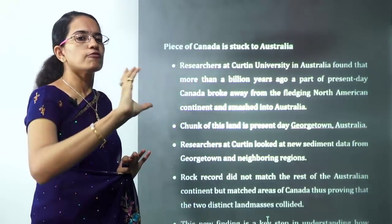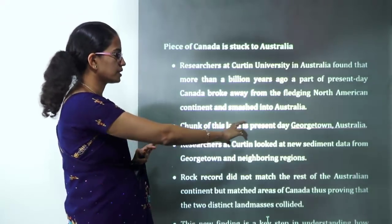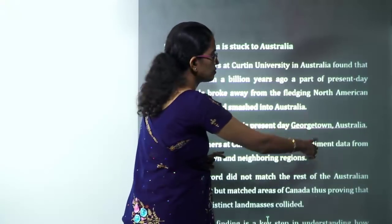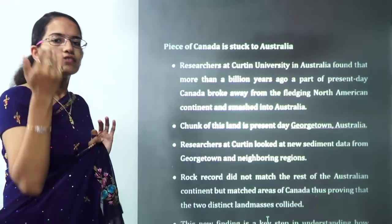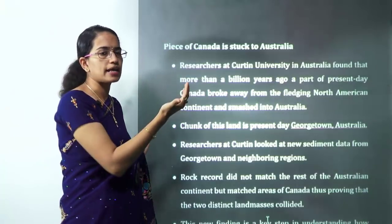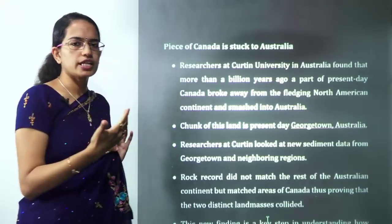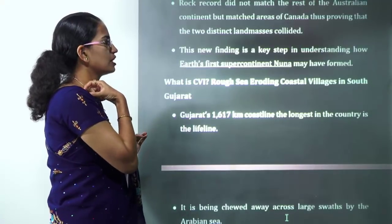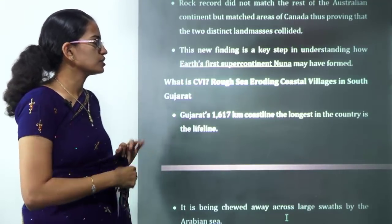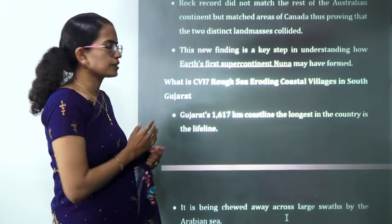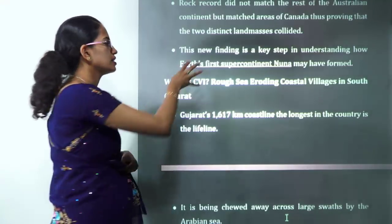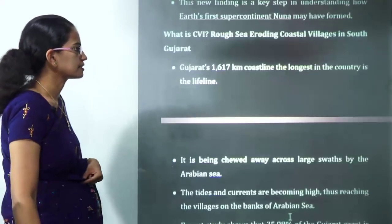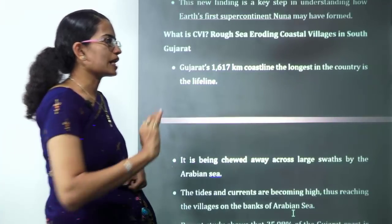A recent discovery found that a piece of Canada separated from the American mainland and joined the part of Australia in the region of Georgetown. This is one of the notable recent geological discoveries. It has been brought about by the Earth's first supercontinent — Nuna — which is an important topic for geography optional candidates.